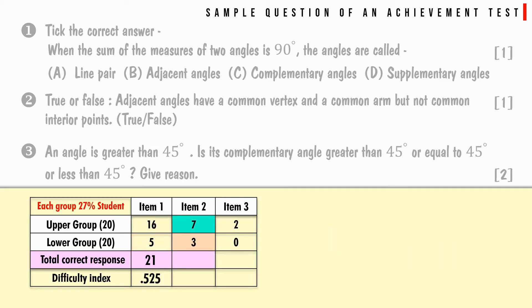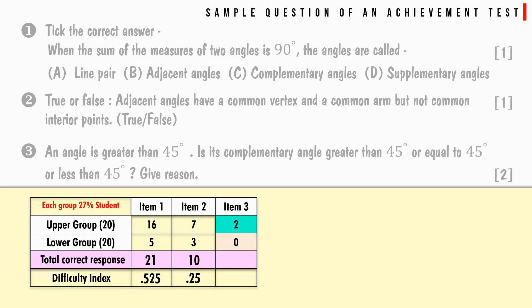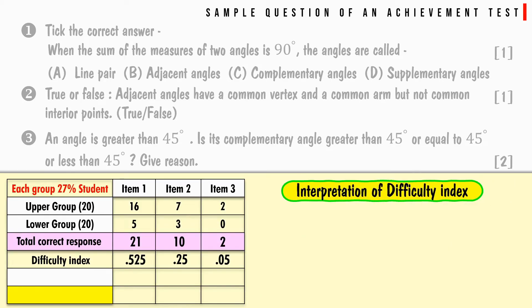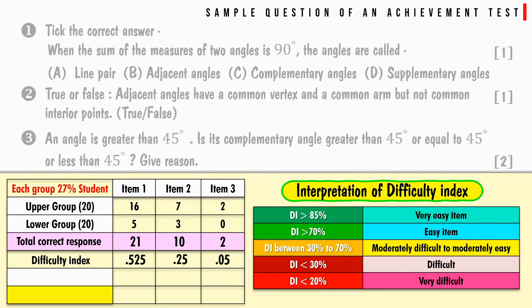For item number 2, the total correct responses are 10 and the difficulty index is 0.25. For item number 3, the total correct responses are 2 and the difficulty index is 0.05. Interpreting these using the difficulty index table: item 1 is average — select it; item 2 is difficult — can still select it; but item 3 is very difficult — reject it.